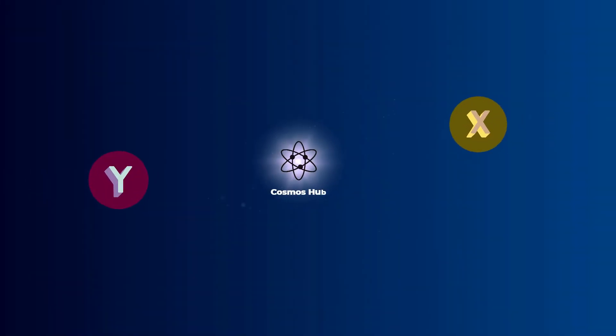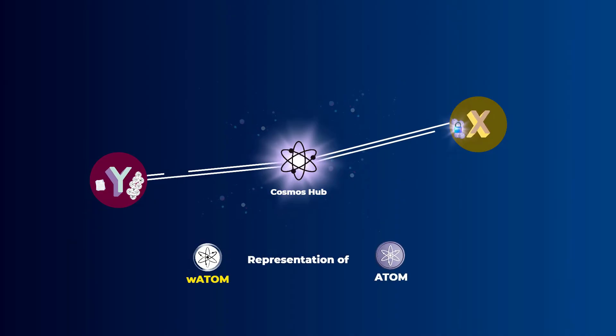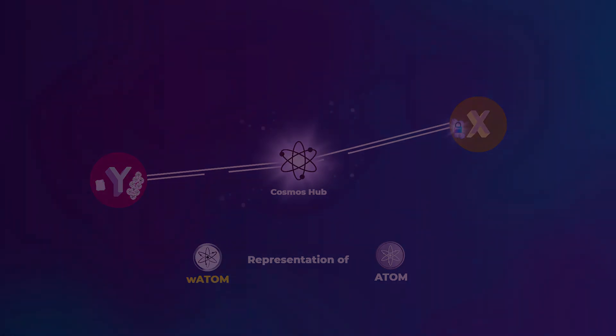Let's say that you want to transfer 10 Atom tokens from Zone X to Zone Y, and the two zones are connected to the Cosmos Hub. First, your 10 Atom tokens will be locked up on Zone X. Now we need a way to send a message to Zone Y to let it know that your 10 Atom tokens were locked on Zone X. That is where the Cosmos Hub comes into play. The message is transferred from Zone X to Zone Y through the Cosmos Hub, and when it reaches Zone Y, new 10 wrapped Atom tokens are created. These wrapped Atom tokens are not the real tokens you had on Zone X, they are a representation of them, and they have the same value as the original tokens.